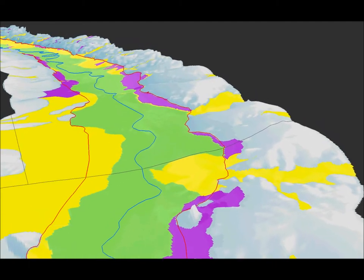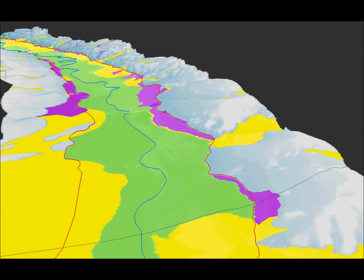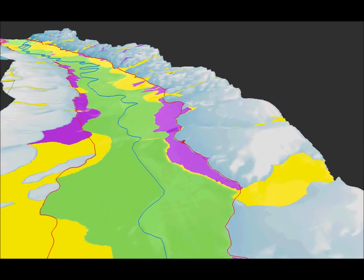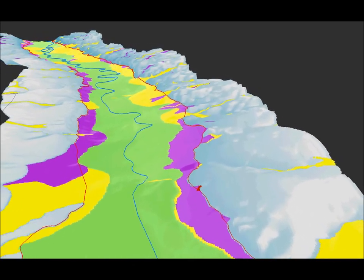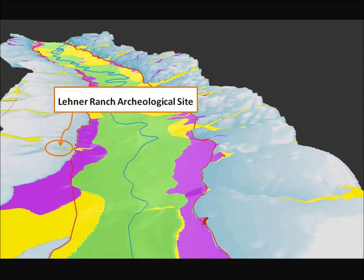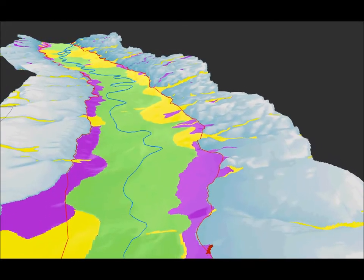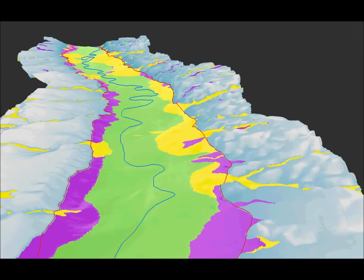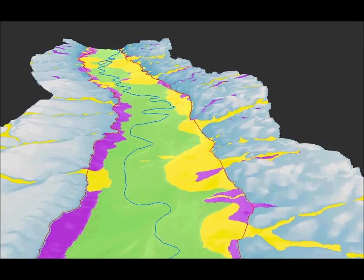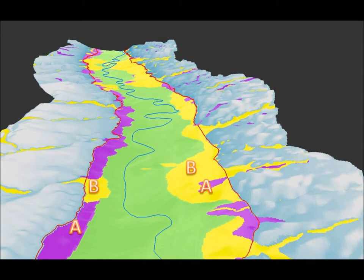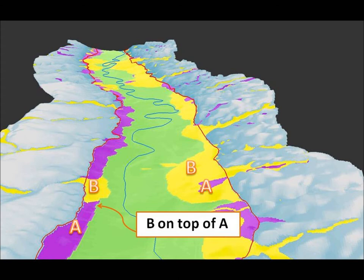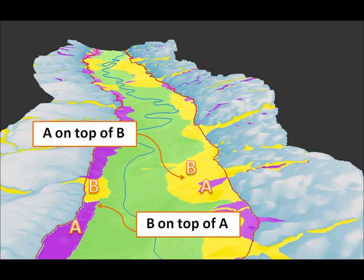The road in the foreground crosses the San Pedro River at the Hereford Bridge. On the left side of the floodplain is the Lerner Ranch archaeological site discussed in the written portion of my affidavit. It is located just outside of the floodplain in the tributary Holocene alluvium. In the foreground there are two alluvial fans, one on each side of the floodplain. The fan on the left side is mapped as tributary Holocene alluvium, yellow, with a label B, and it overlies Holocene basin fill, purple, with a label A. The fan on the right side is the reverse, in that the Holocene basin fill, purple, with a label A, overlies tributary Holocene alluvium, yellow, with a label B.